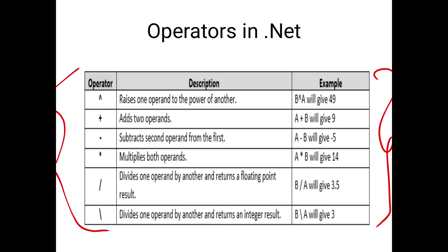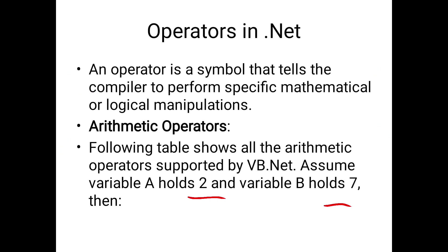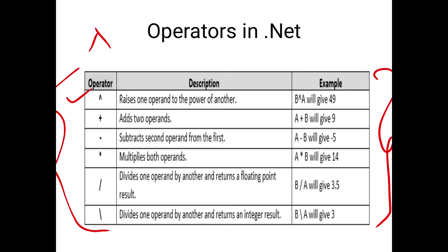The first arithmetic operator raises one operand to the power of another — for example, 2 raised to 3, 3 raised to 4, 4 raised to 2. This raise-to operation is performed by the power operator. B raised to A will give 49, because the value of A is 2 and the value of B is 7, so 7 raised to 2 is 49.